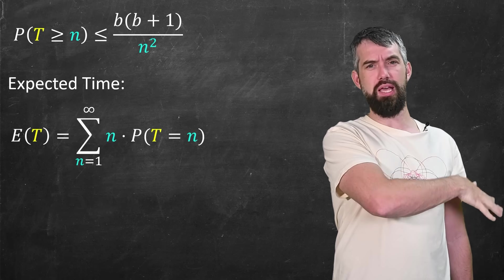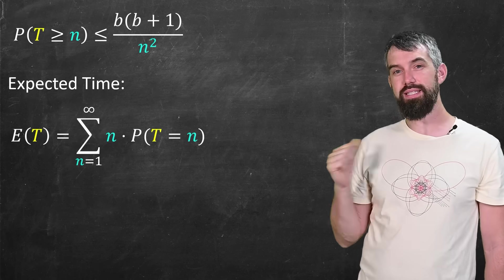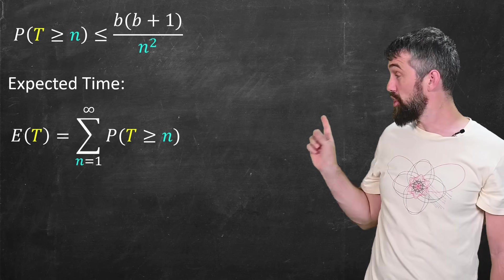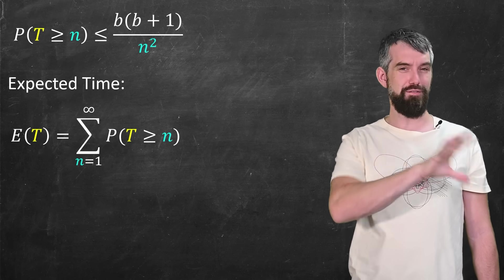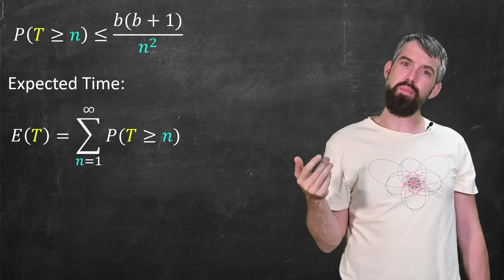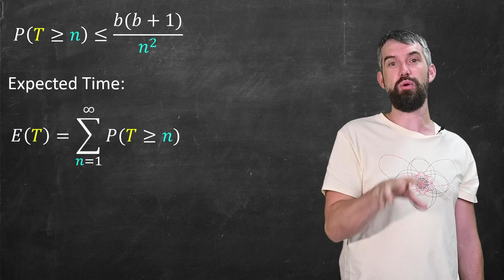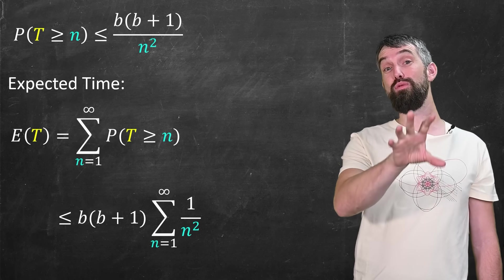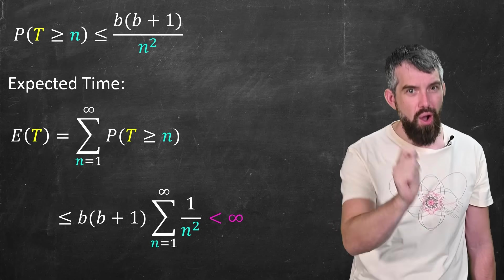Now, I could do the same basic calculation I did before, but it's actually cleaner to use a little trick. I can replace this expected value with the probability of T greater than or equal to n. This is called the tail sum formula. But if I plug that in, I get a sum of 1 over n squared. And famously, that series converges.